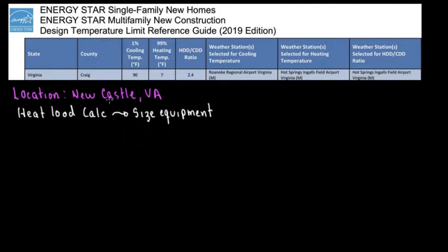Right now what we're focusing on is the outdoor conditions. The outdoor conditions is the design temperature, and the location is Newcastle, Virginia. And you have actually three options — three tables.